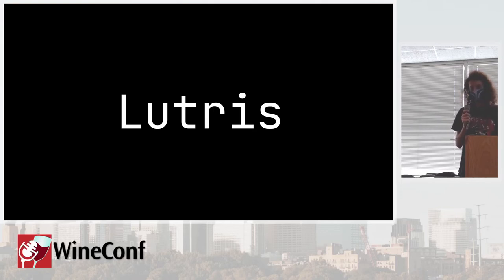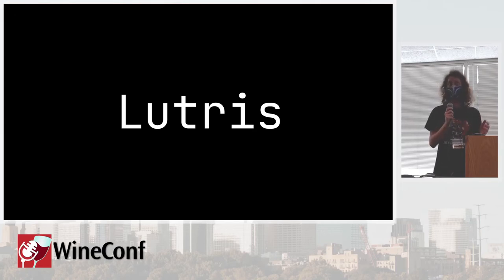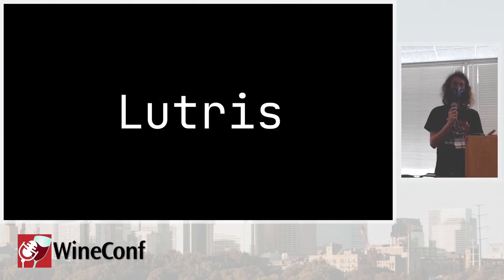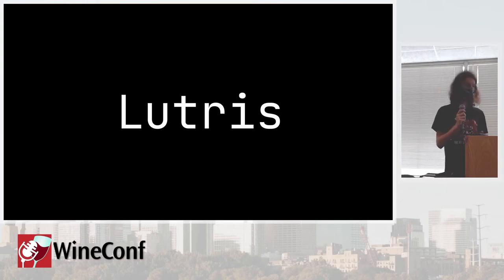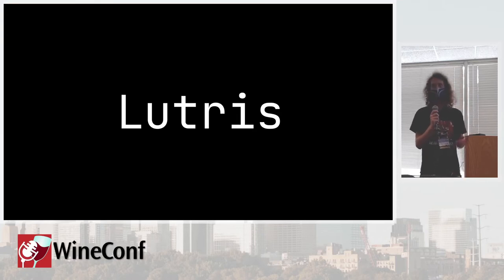One of the difficulties with early Lutris was shipping a Wine build that would work everywhere, because we didn't want to depend on the distribution. At first we wanted the really latest version of Wine, but then we wanted the latest version with a bunch of patches added. We started using system Wine, then Wine Staging, and that wasn't good enough for some things. We started integrating some patches that were very game-specific — a lot of hacks for stuff not ready for inclusion in upstream, but they were proved to work.